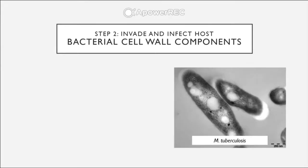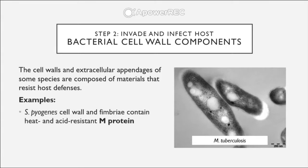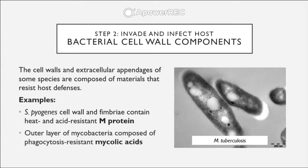Some specific bacterial cell wall components also contribute to virulence. The cell walls and extracellular appendages of some species are composed of materials that resist host defenses. Examples include S. pyogenes, which has a cell wall and fimbriae containing heat- and acid-resistant M protein, and the outer layer of mycobacteria, which is composed of phagocytosis-resistant mycolic acids — their acid-fast cell wall component.